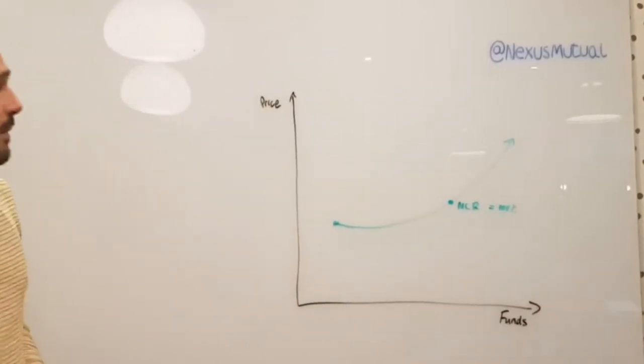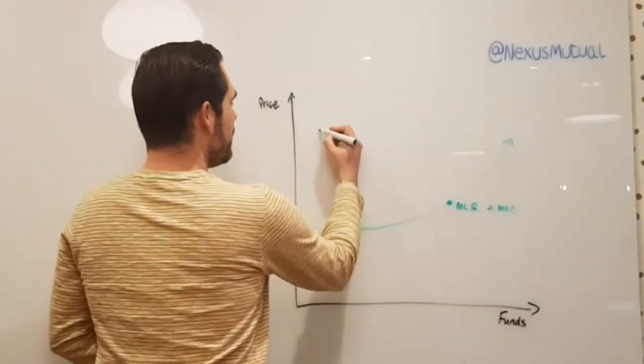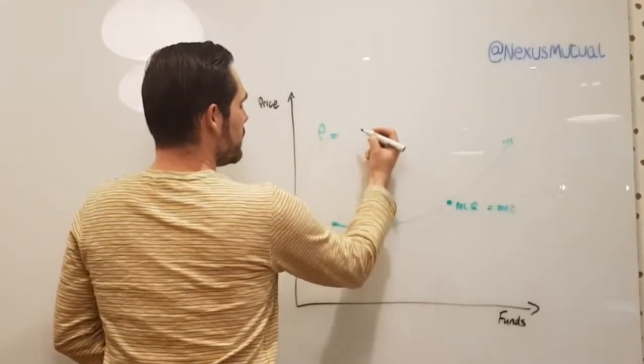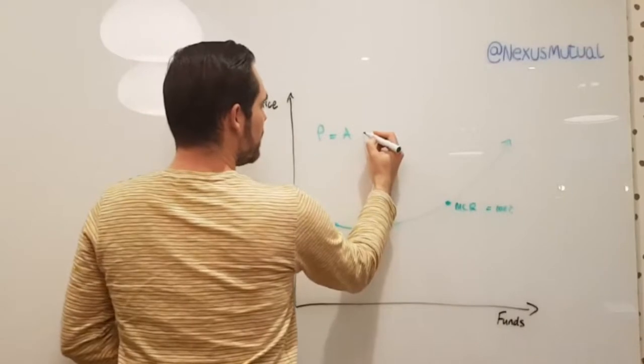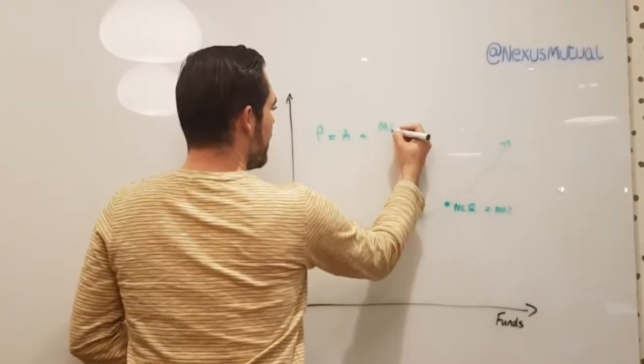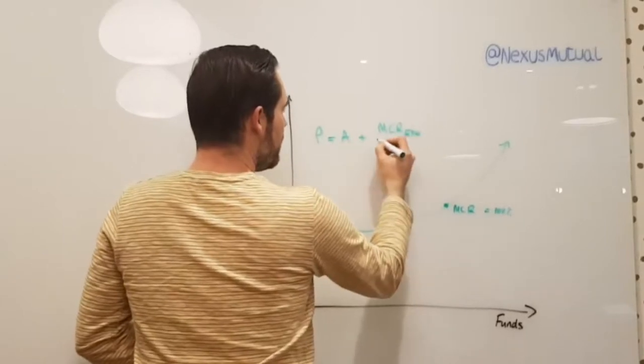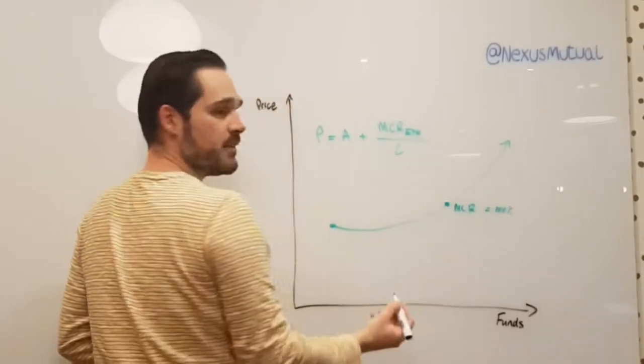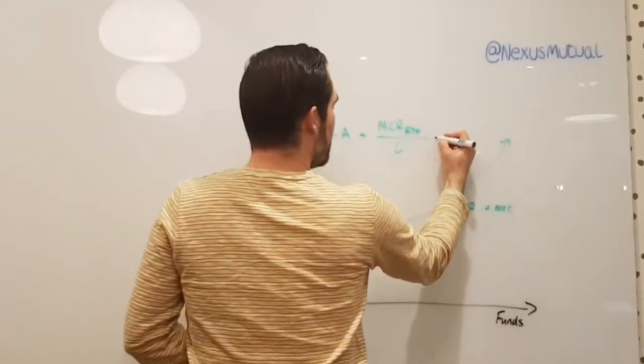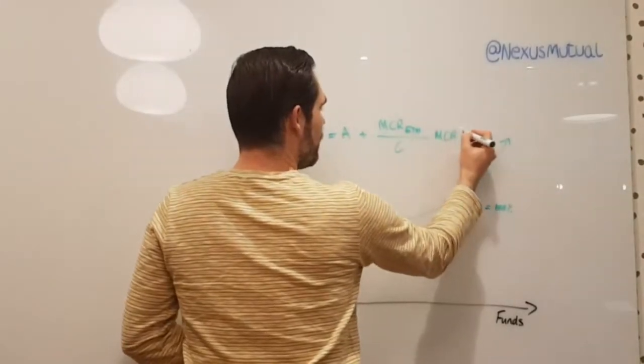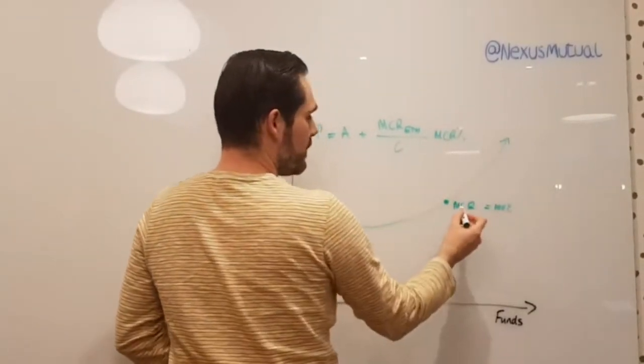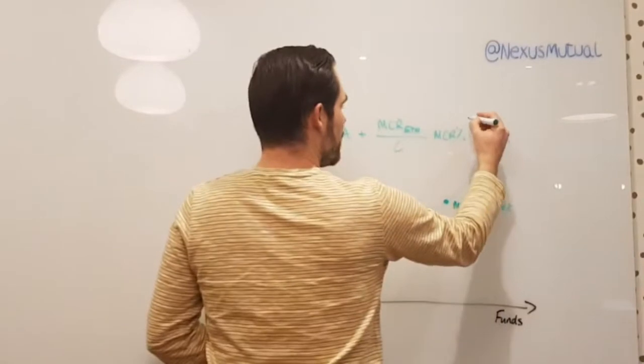The token model formula is actually price equals a constant value, which we'll set at launch, plus the minimum capital requirement in Ether, divided by another constant we set at launch, then multiplied by the ratio, the minimum capital requirement percentage, all to the power of 4.